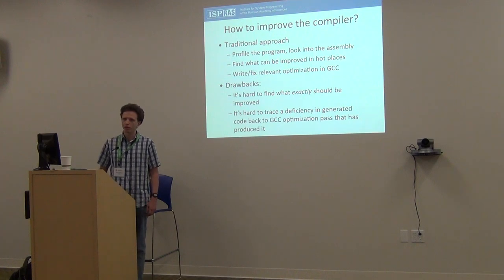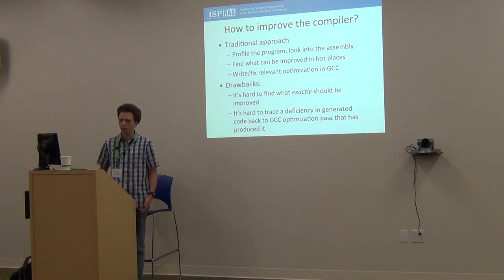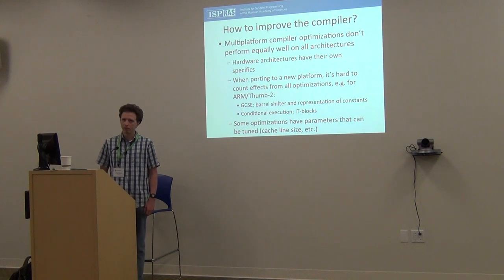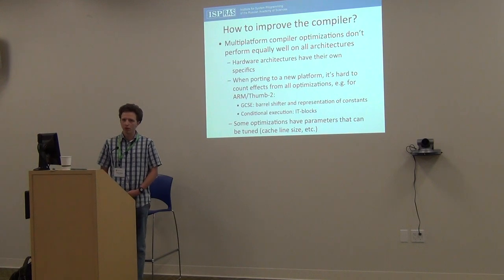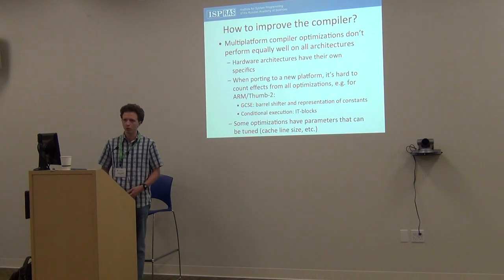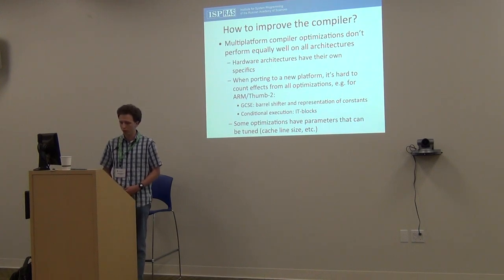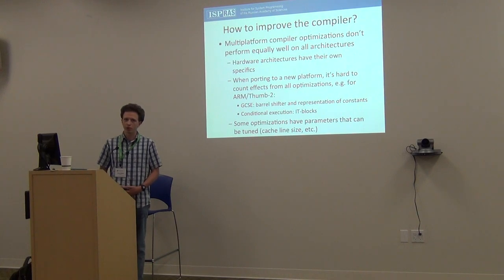It's also hard to trace the deficiency found in code to a specific optimization that produced it. On the other hand, a multi-platform compiler often leaves room for tuning. In the case of GCC, when you start to port it to a new platform, you just write a backend and don't test all the optimizations one by one — you care first about correctness. But many platforms have their own specifics which weren't considered when optimizations were written.